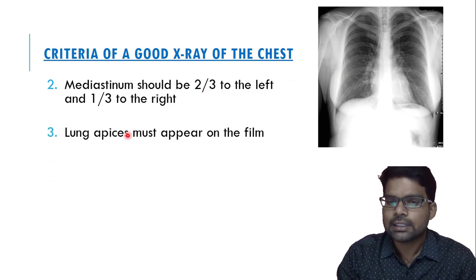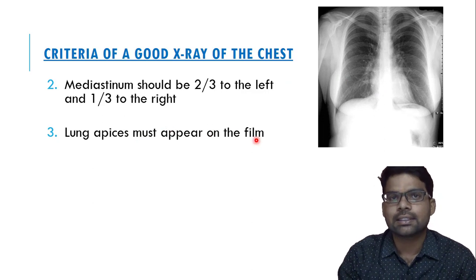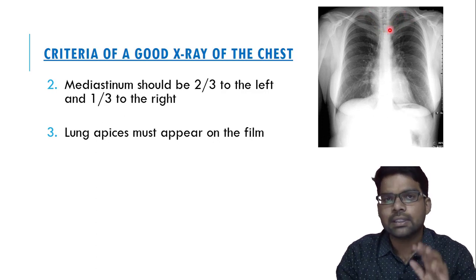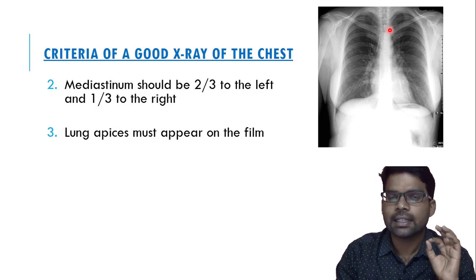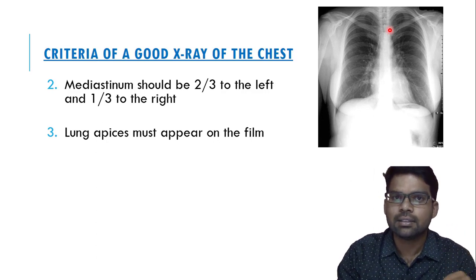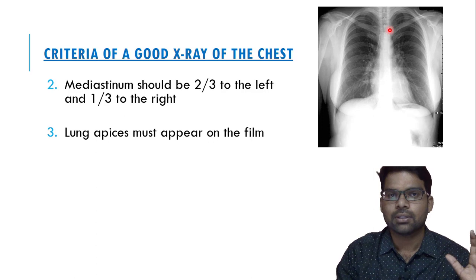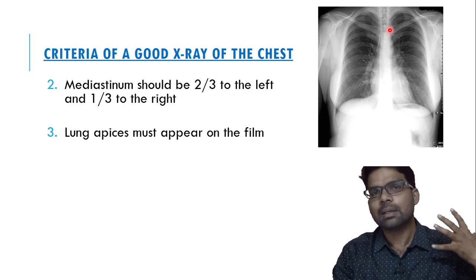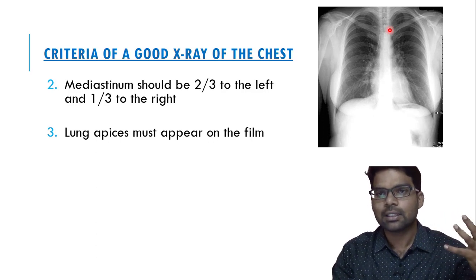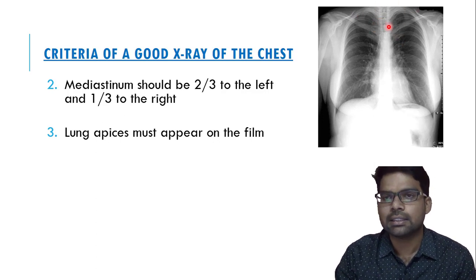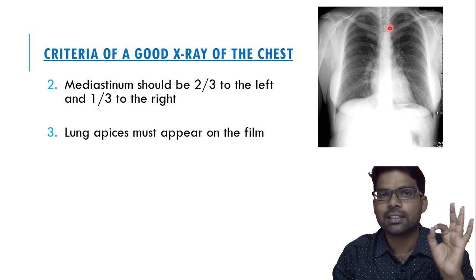Number three: lung apices must appear on the chest X-ray film. The lung apex should be visible on the chest X-ray. For this, the X-ray technician should instruct the patient to take a deep breath and hold. Once the patient takes a deep breath and holds, the lung apices are filled with air, which can be captured on the chest X-ray film. The apices of the lung must be visible for it to be a good quality chest X-ray.